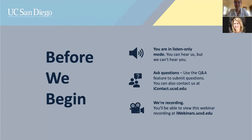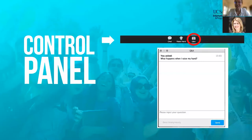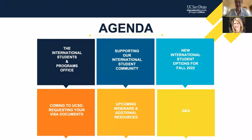That will take you to previously recorded webinars as well as let you register for upcoming webinars. You can submit questions at any point during today's webinar, and we will have some time dedicated at the end for an open Q&A. Today we'll do a brief introduction and overview of ISPO, talk about ways our office supports our international student community, discuss what fall 2022 might look like, requesting your visa documents, and an overview of additional upcoming webinars and resources.